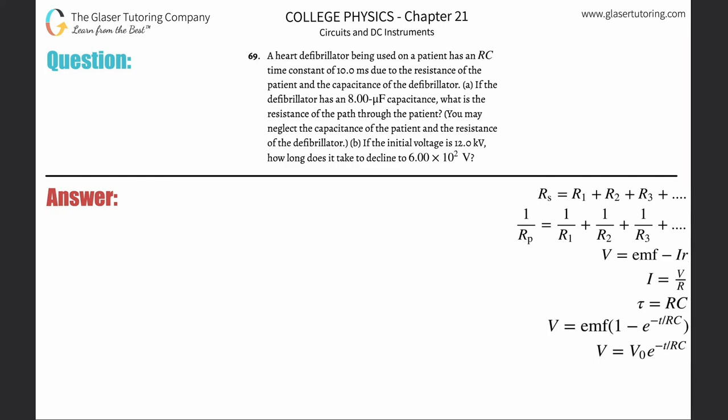Number 69, a heart defibrillator being used on a patient has an RC time constant of 10 milliseconds due to the resistance of the patient and the capacitance of the defibrillator. Part A: if the defibrillator has an 8 microfarad capacitance, what is the resistance?